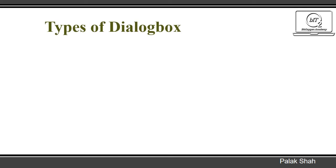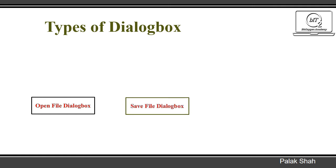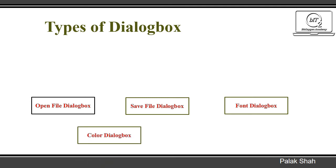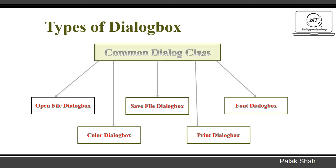Types of dialogue box. There are five types of dialogue boxes in VB.NET. First is the open file dialogue box. Second is the save file dialogue box. Third is the font dialogue box. Fourth is the color dialogue box. Fifth is the print dialogue box. Classes of all these dialogue boxes are inherited from one base or parent class named the CommonDialog class. That means CommonDialog is the parent class and the classes of each dialogue box act as child classes.